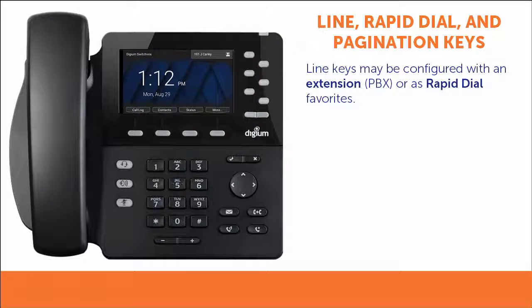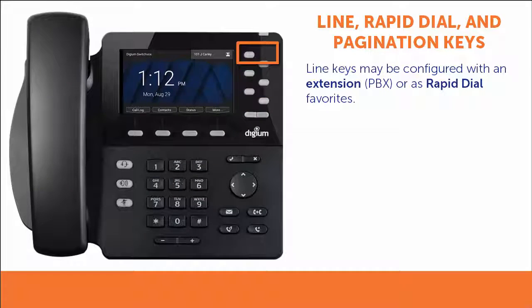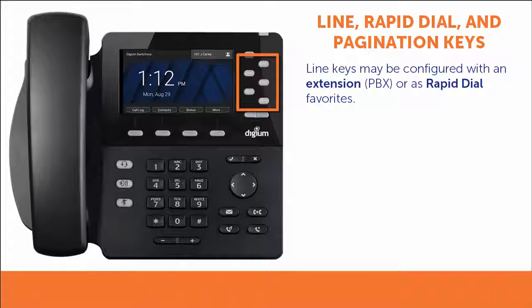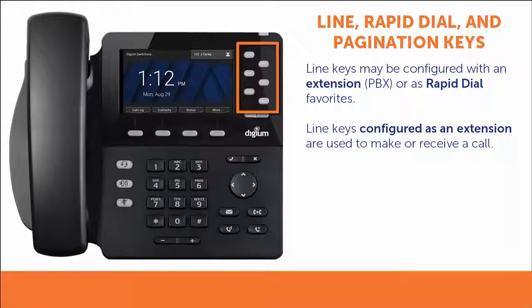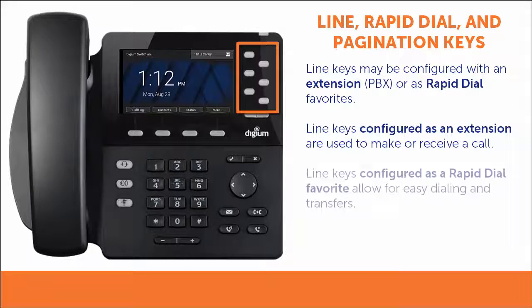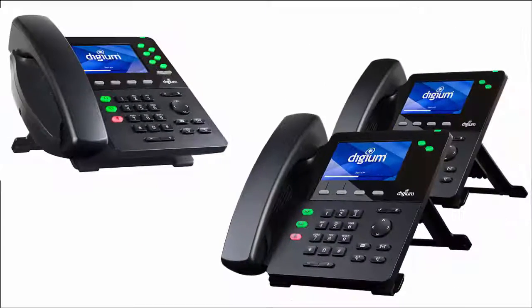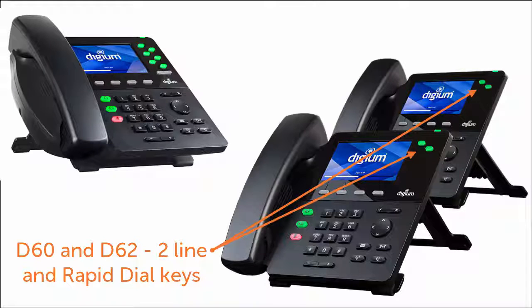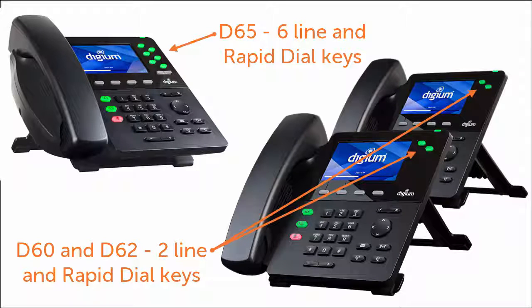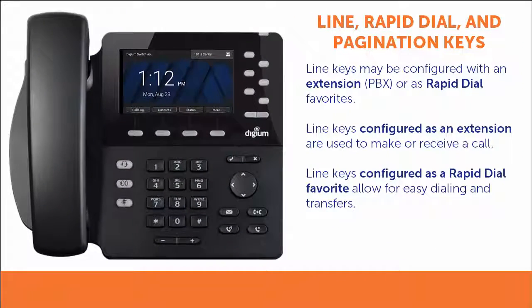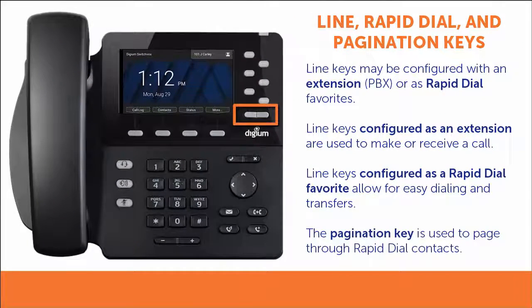To the right of the display are the line keys, the rapid dial keys, and the pagination key. The first line key is always the phone's main extension. The other line keys can be used as extensions or for rapid dial. Line keys are used exclusively for making and receiving calls. Rapid dial keys are used for easy dialing and transfers. The D60 and D62 feature two line and rapid dial keys, while the D65 features six line and rapid dial keys. The D65 also has a pagination key that allows you to page through multiple keys of rapid dial contacts.